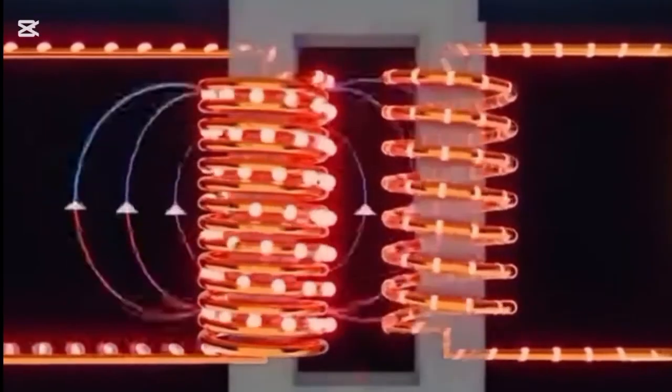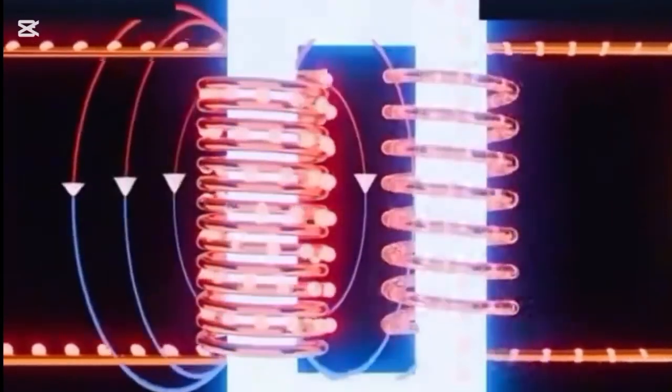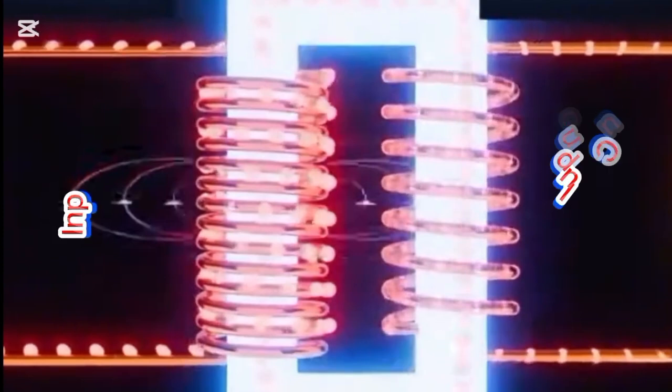When electricity flows in the primary coil, it creates a changing magnetic field. This magnetic field passes through the core and cuts through the secondary coil, creating electricity there too.